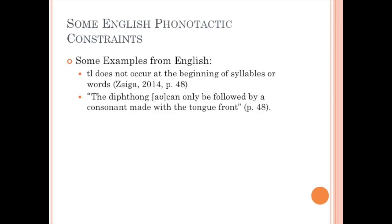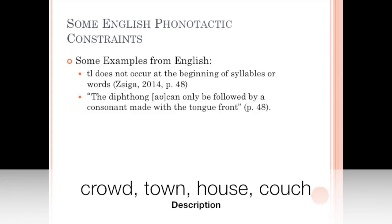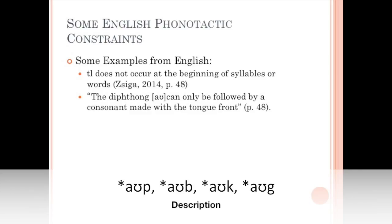Another example is that the diphthong ao can only be followed by a consonant made with the tongue front. So we can say aod, as in crowd, because the consonant d is made with the front of the tongue, or aon, as in town, because that consonant is also made with the front of the tongue. We can say house, we can say couch, but we can't follow that diphthong with a bilabial or velar sound. We don't have words containing the combination alp, aub, auk, or aug.